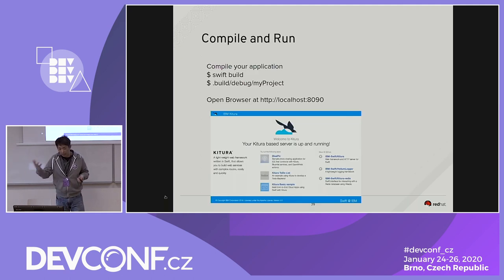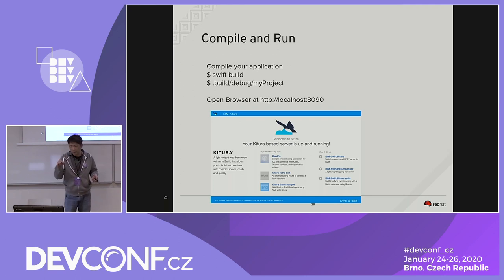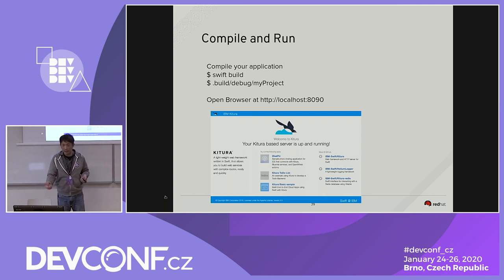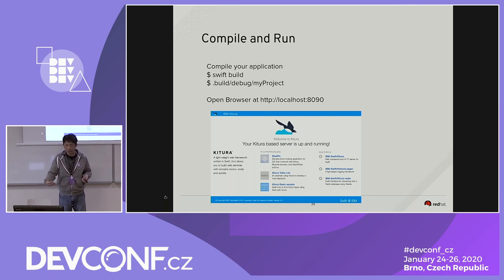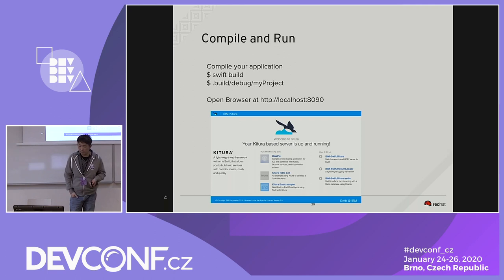To compile your application, you run swift build. Once it's built, it generates an executable inside the .build folder. You go to .build/debug/myproject, then open localhost:8090 to see the webpage you just created for your Kitura application.